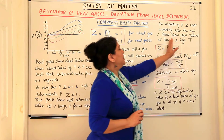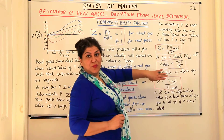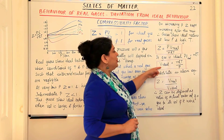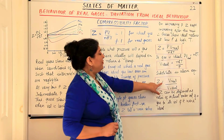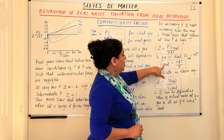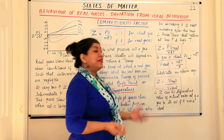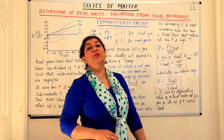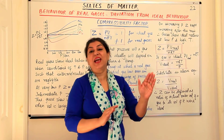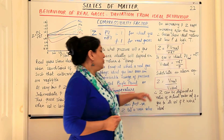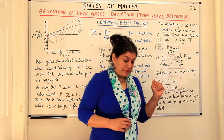Substituting V_ideal = nRT / P into the compressibility factor equation, we get Z = V_real / V_ideal. So the compressibility factor is the ratio of the actual molar volume of a gas to its volume if it were ideal. Z can be defined as the ratio of the actual molar volume of a gas to its volume if it were ideal. This concludes the discussion on the compressibility factor.